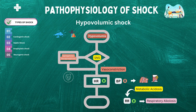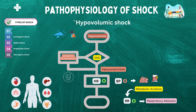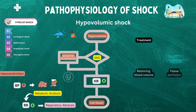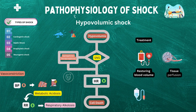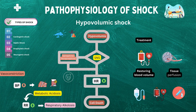If left untreated, hypovolemic shock can progress to irreversible tissue damage and organ failure. The brain, heart, lungs, kidneys, and liver are particularly vulnerable to hypoperfusion, which can lead to ischemia, infarction, and ultimately cell death. Treatment for hypovolemic shock involves restoring blood volume and improving tissue perfusion. This may involve the administration of intravenous fluids, blood transfusions, or medications that improve cardiac output or vasodilation. In severe cases, surgical intervention may be necessary to stop bleeding or repair damage to organs.